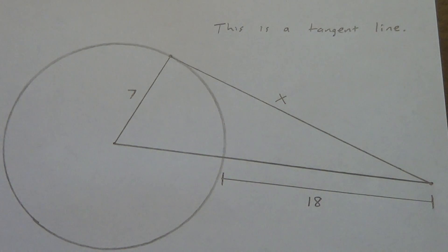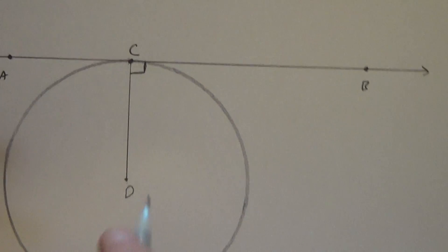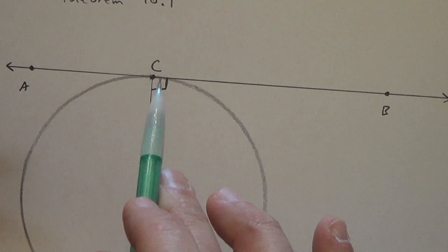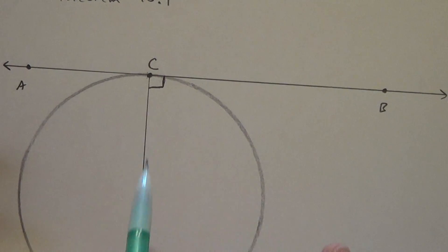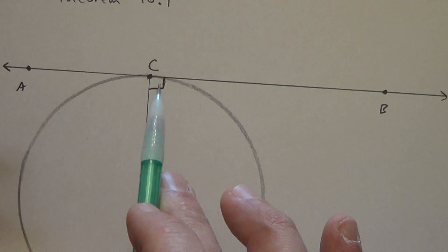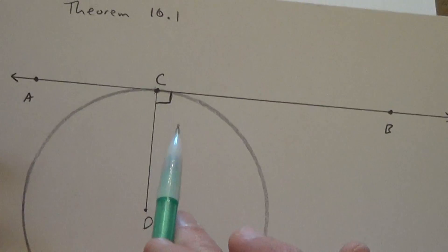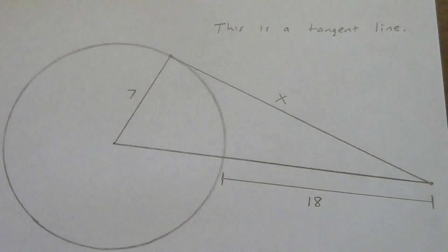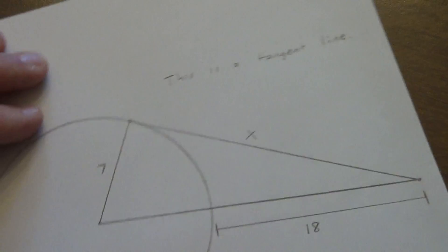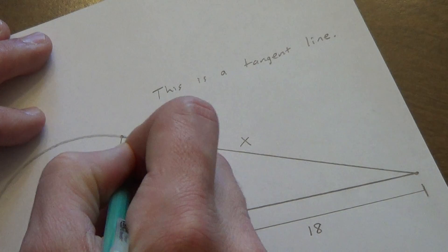Thinking back to theorem 10.1, if this is a tangent line, then it has to be perpendicular to the radius at the point of tangency. So we know we have a right angle here. You guys remember this from the last video, hopefully. So since this is a tangent line, we know we have a right angle right here.